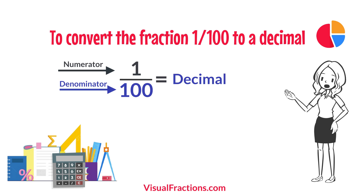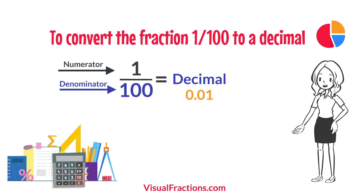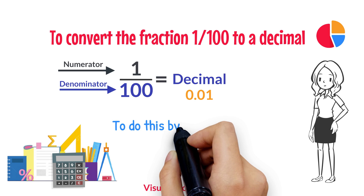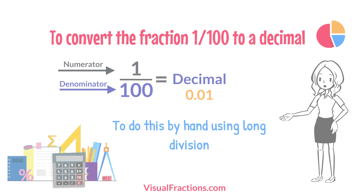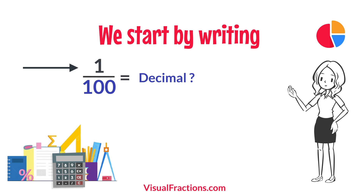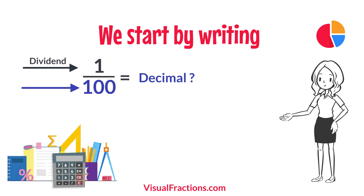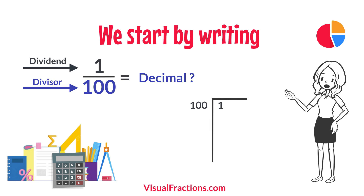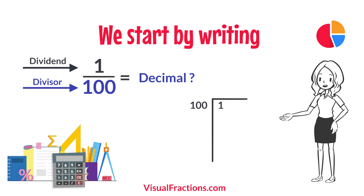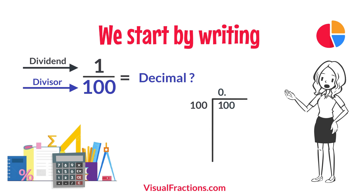The answer we get is 0.01. To do this by hand using long division, we start by writing 1 as the dividend and 100 as the divisor. Since 100 doesn't fit into 1, we add a decimal point in our answer and append two 0s to 1, making it 100.